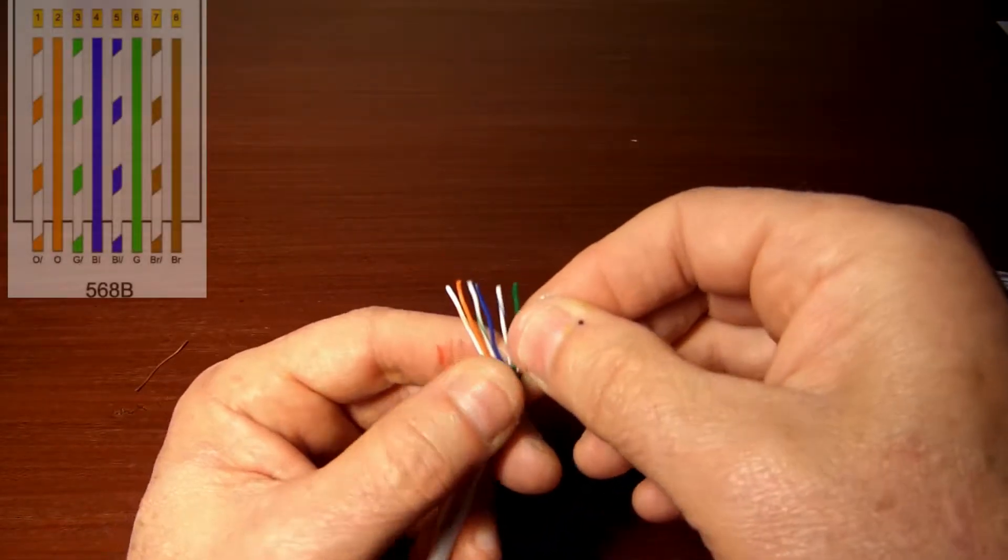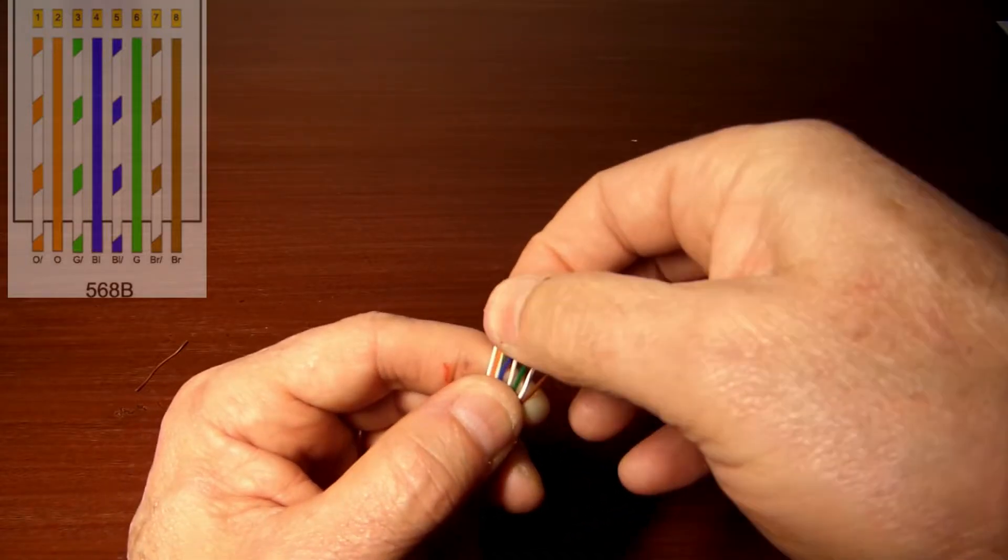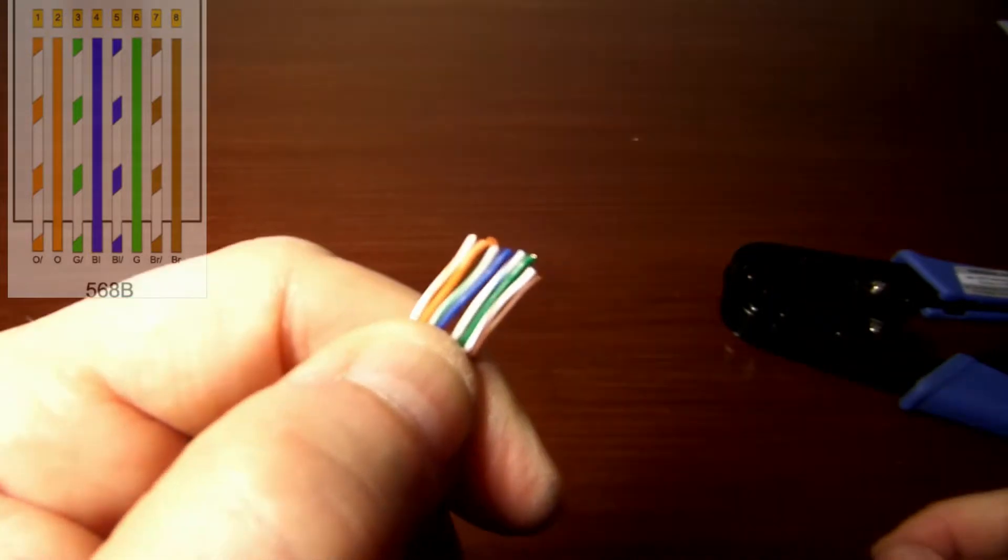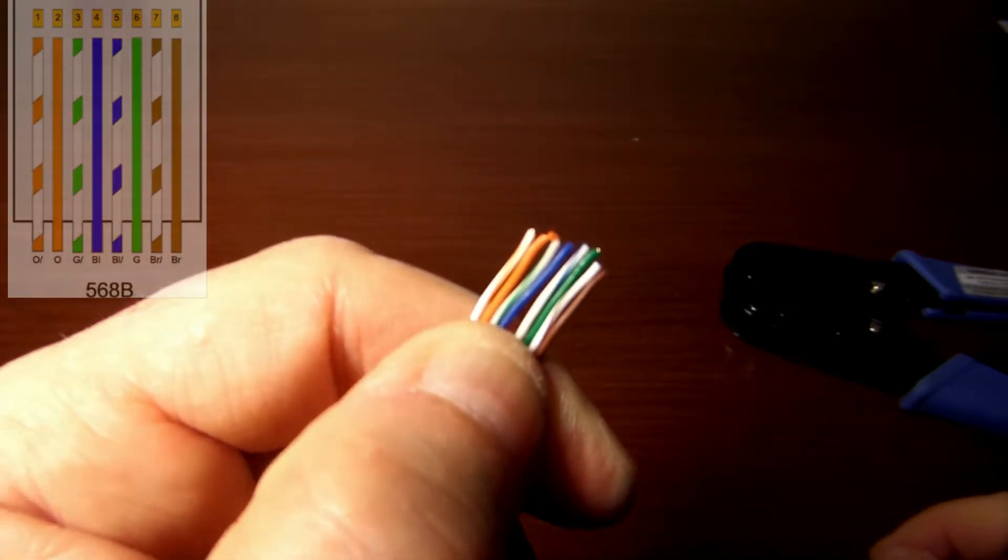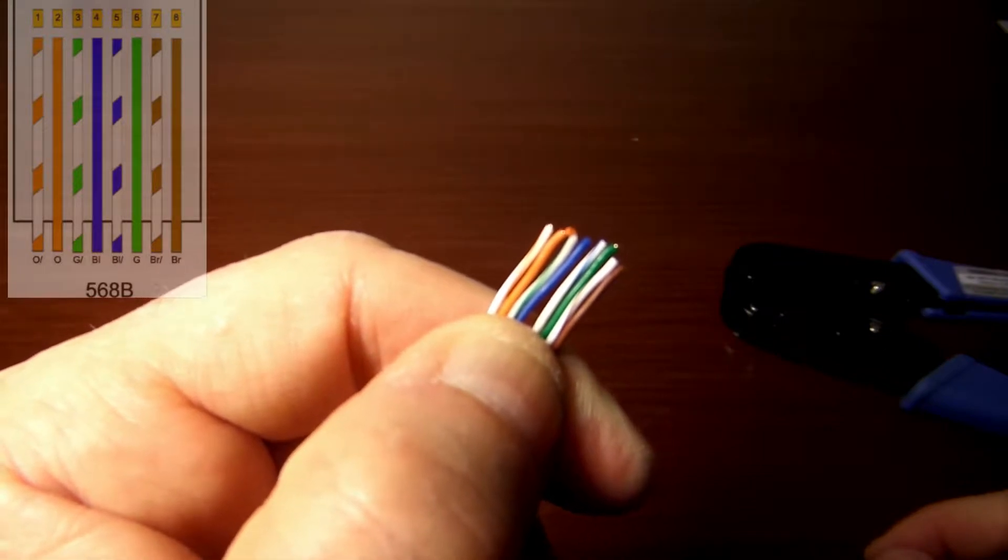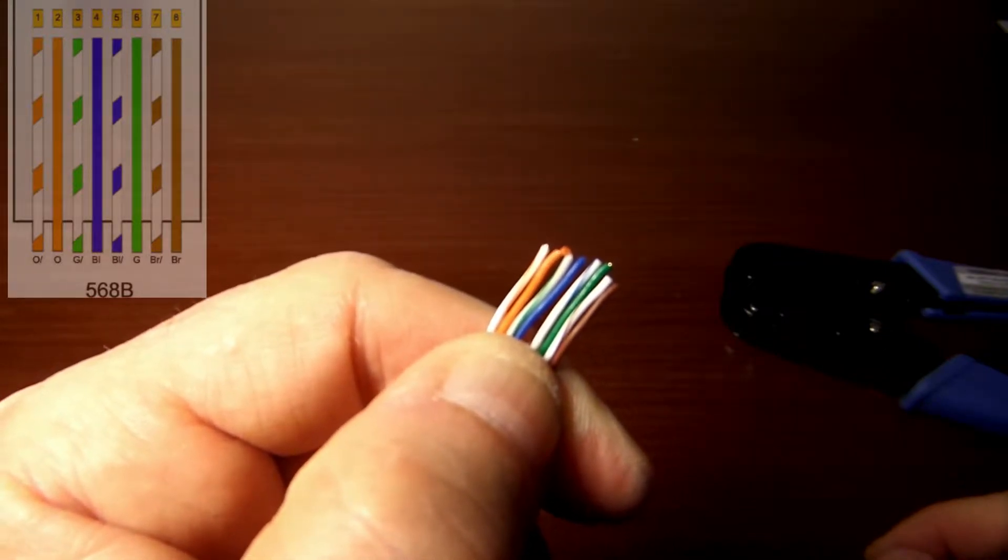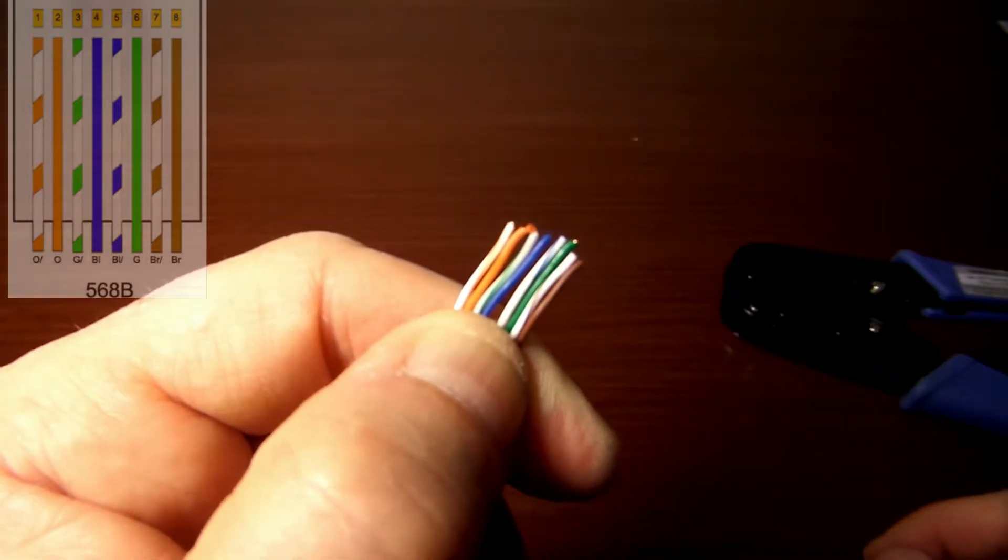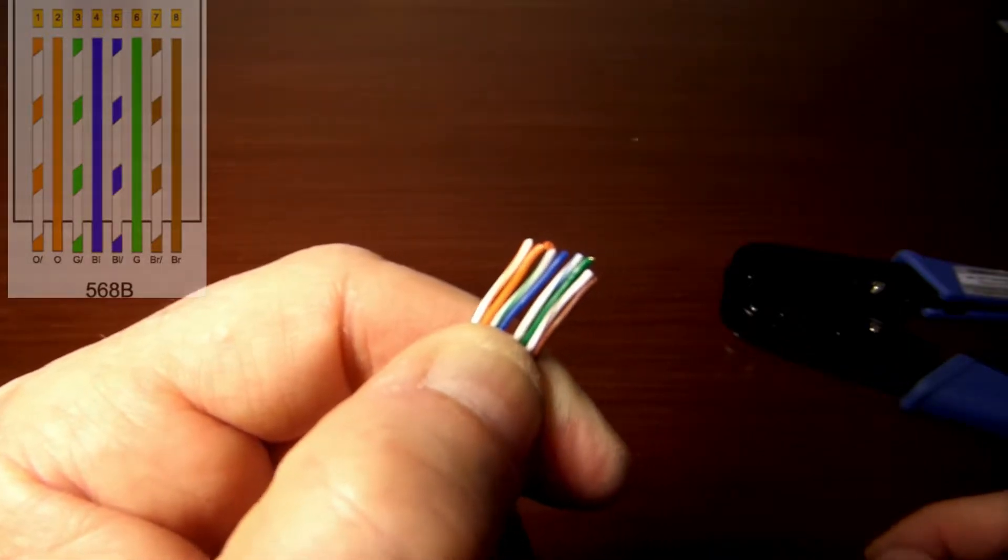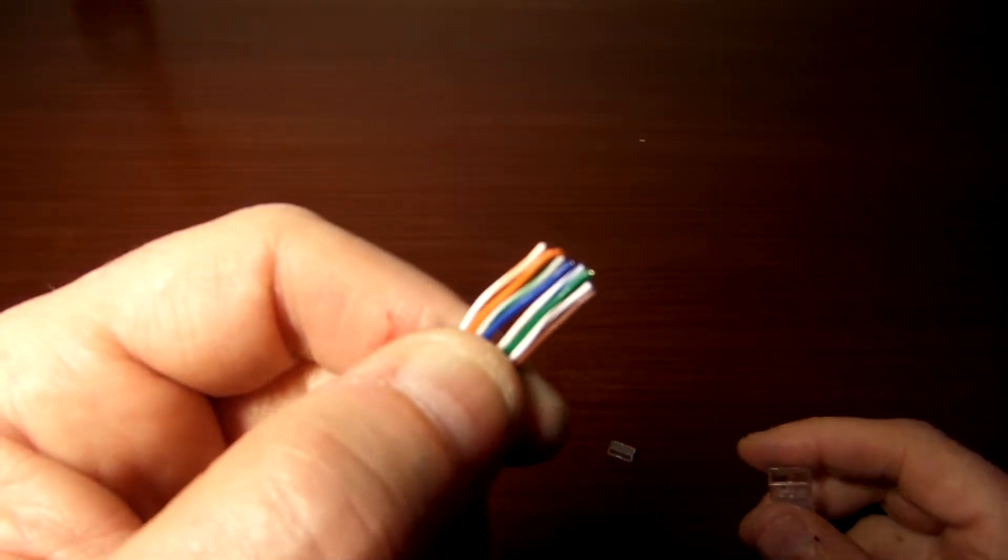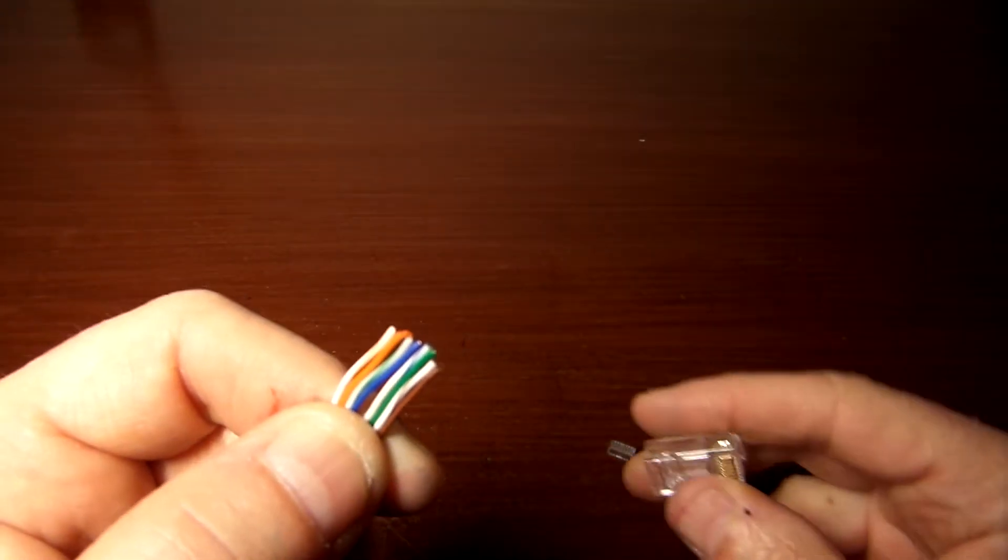Let's work to get these together then. Here again, the sequence: I have the orange and white, orange, then green and white, blue, blue and white, solid green, then the brown and white, and then brown. Now we're ready to put the sequenced wires into the crimp connector.